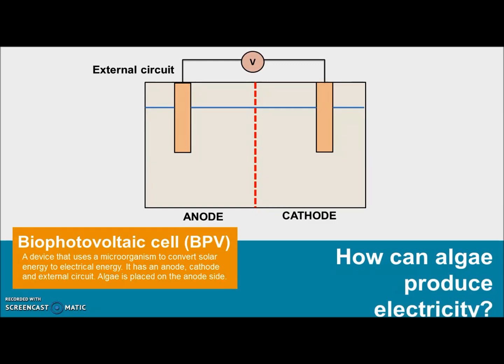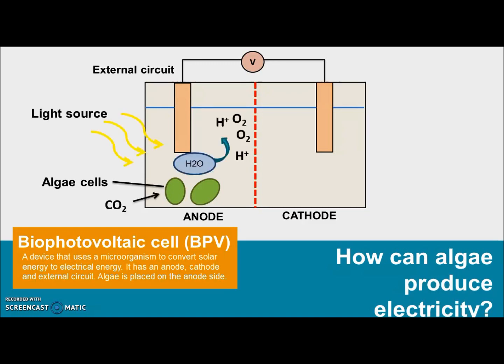As you can see from the picture, it consists of an anode, cathode, and also an external circuit. At the beginning, we place the algae cells at the anode side. Since algae is similar to plants, they are able to carry out photosynthesis. We provide them with enough light source, carbon dioxide, and water, and they will use these sources to convert water into oxygen and protons.